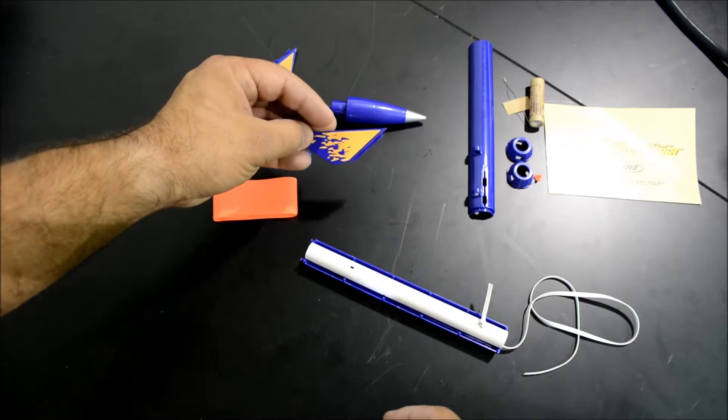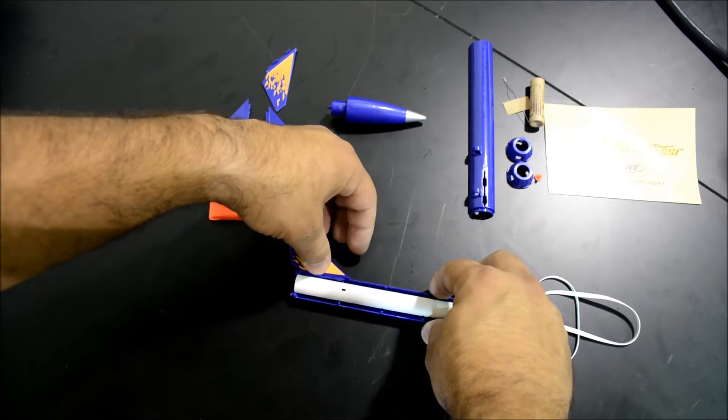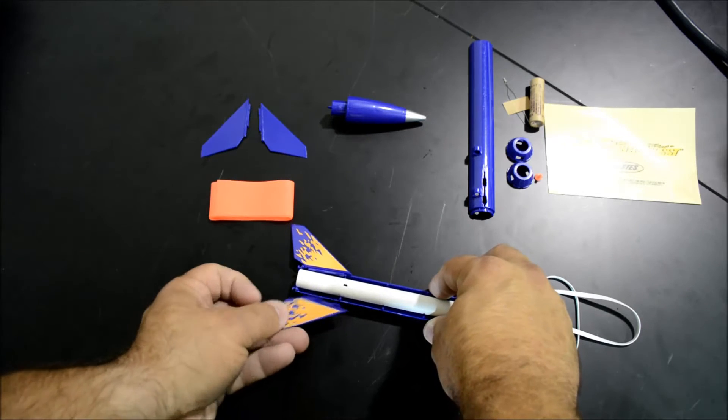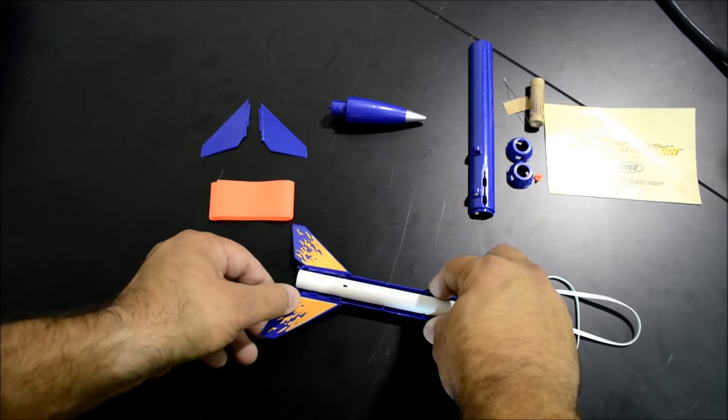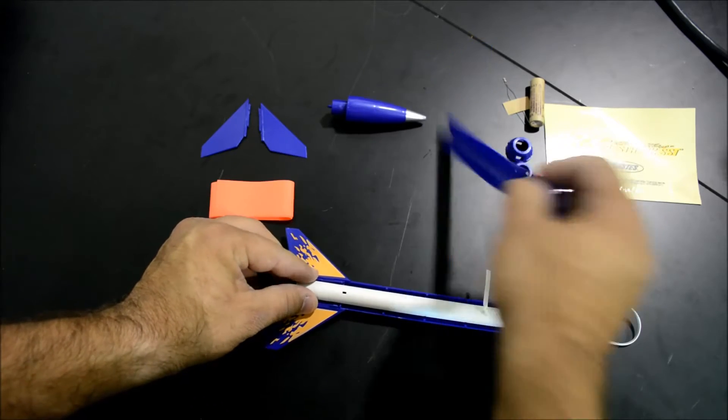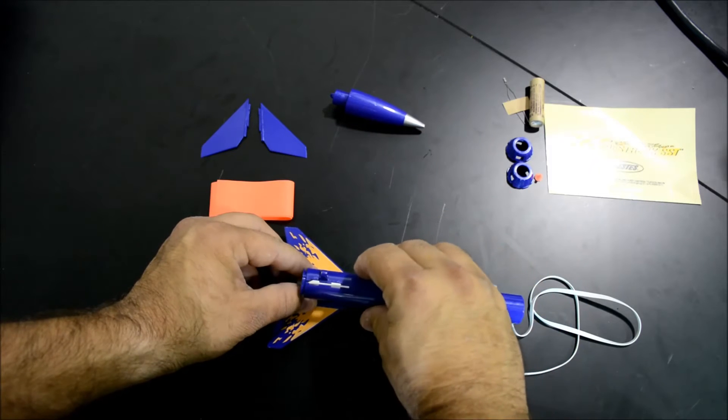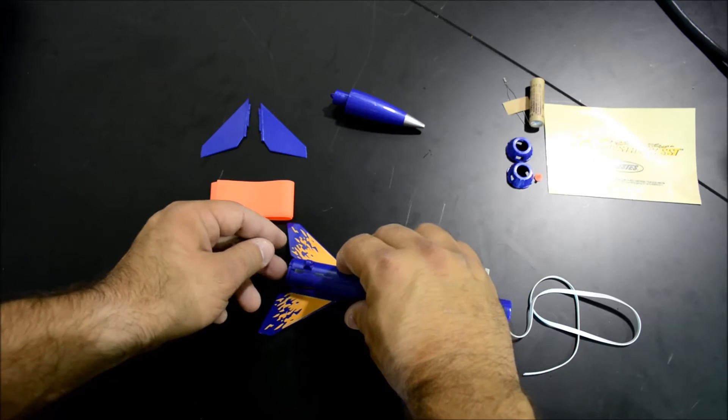Take the two flamed fins, that is to say the fins with the flames on them, and insert them into the small slots on either side of the body tube. Then install the other half of the plastic tube.